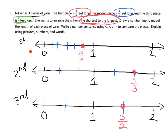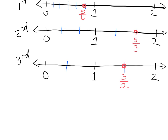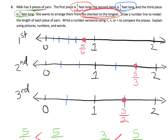Now we can see that in order from shortest to longest: the first piece (five-sixths) is the shortest, the third piece (three-halves) is in the middle, and the second piece (five-thirds) is the longest. We can also write comparison statements: five-sixths is less than five-thirds, and three-halves is less than five-thirds. That's a couple of examples of using the less than and greater than symbols.